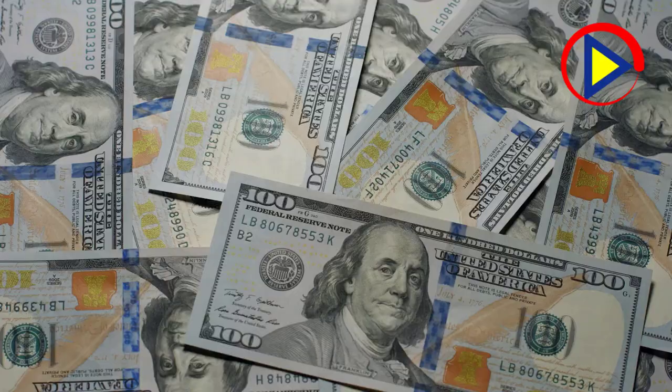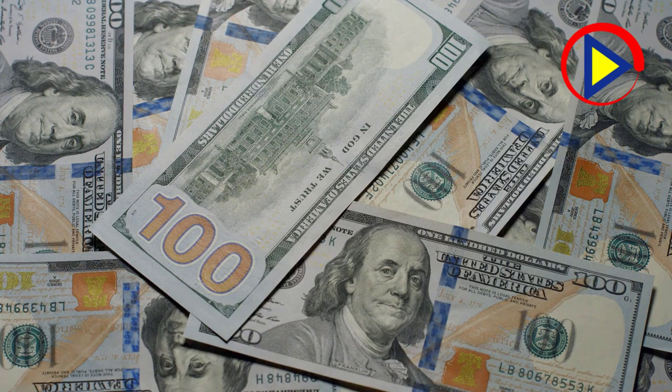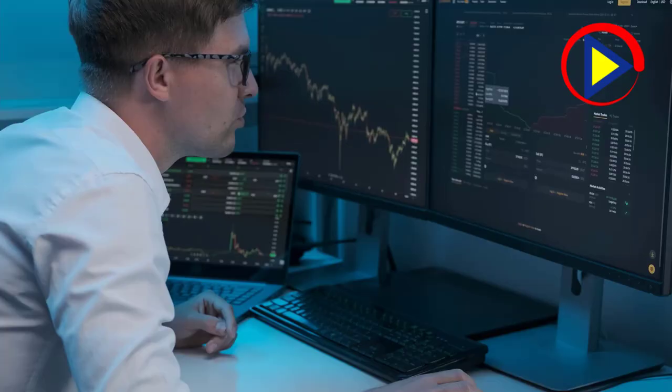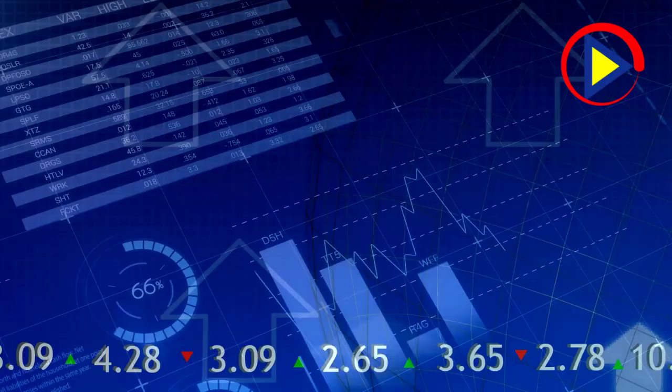People talk about the dollar-euro exchange rate. Well, there's a dollar-gold exchange rate and that's the dollar price of gold. So there's just alternative forms of money where people get to express a liquidity preference or a credit preference, if you will, if you're concerned about or losing confidence in the dollar.